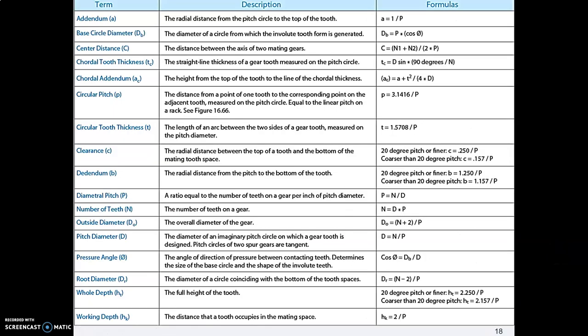And finally, here is the table out of our book that we can use for calculating the addendum, the circular pitch, the dedendum, the hole depth, and so forth. You'll notice this is the same table, and we use the same table whether we're doing a spur gear or a bevel gear.